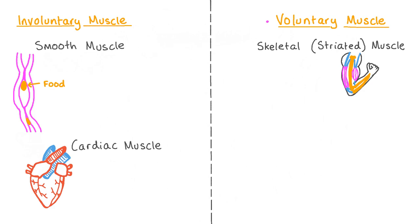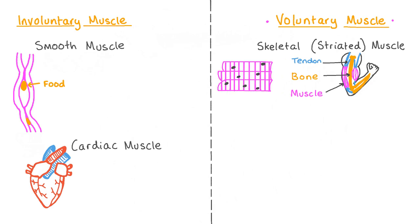Some examples of voluntary skeletal muscles can be found in our limbs, such as to allow our arms and legs to move. They are called skeletal muscles as they are attached to the bones of our skeleton by tendons. Skeletal muscle cells are sometimes called striated muscles due to their stripey appearance.